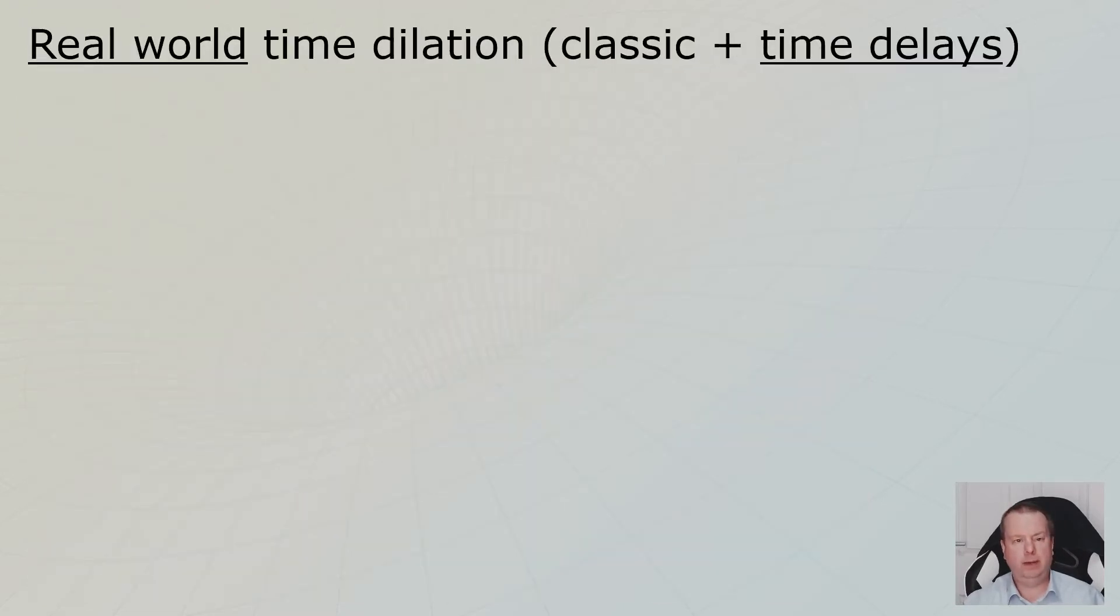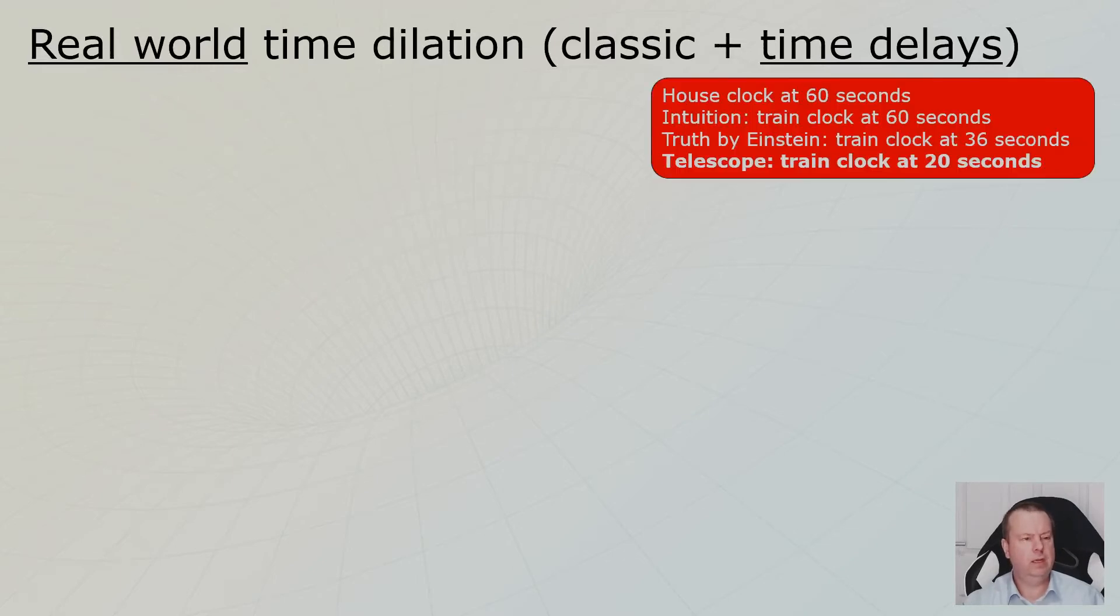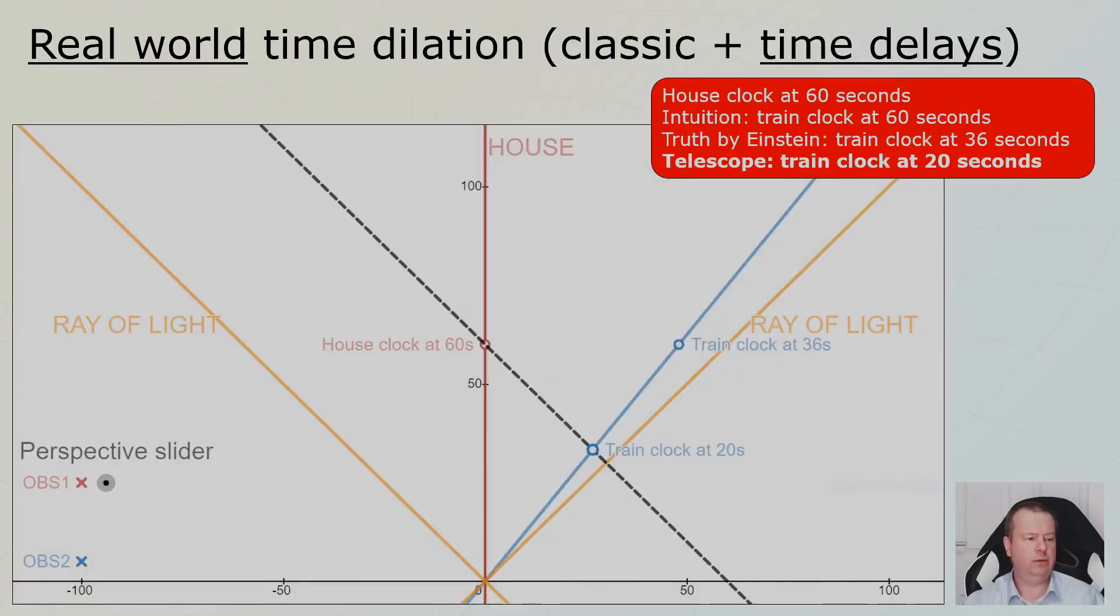And we can actually do this online in a minute. Now let's make it real time. And this is a little bit more difficult. The house, the researcher, the scientist in the house said, I saw on my telescope that your clock was at 20 seconds. How does this work?